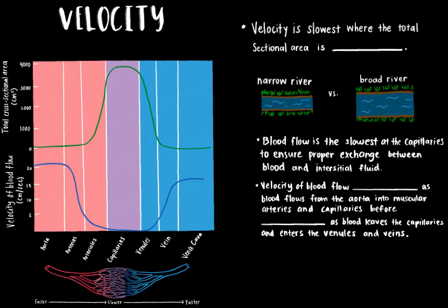Now let's discuss the second factor that affects blood flow: velocity, which is inversely proportional to the cross-sectional area, as depicted by this graph. Velocity is slowest where the total cross-sectional area is greatest, which is the case in the capillaries. Each time an artery branches, the total sectional area increases and as a result, the velocity of blood flow becomes slower. For example, comparing a narrow versus a broad river, the narrow river will flow at a faster rate because a greater surface area of the channel creates more friction and slows the flow.